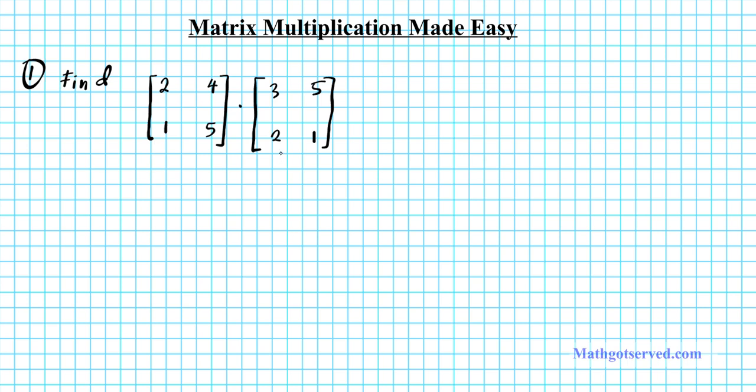Of course the product of matrices are not always defined, so first of all we have to determine if the product is defined. That can be done by looking at the dimension of our matrices. This has two rows and two columns so this is a 2 by 2. This matrix right here is also a 2 by 2 matrix.